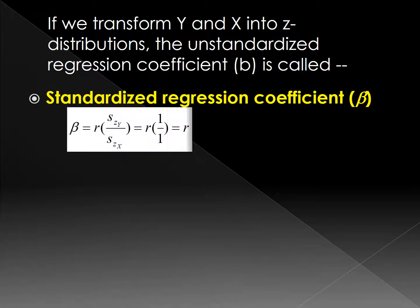Beta equals R multiplied by the ratio of the Z_Y standard deviation and the Z_X standard deviation, which are both 1. So when we have the standardized distribution of X and the standardized distribution of Y, the standardized regression coefficient equals the correlation coefficient between X and Y.